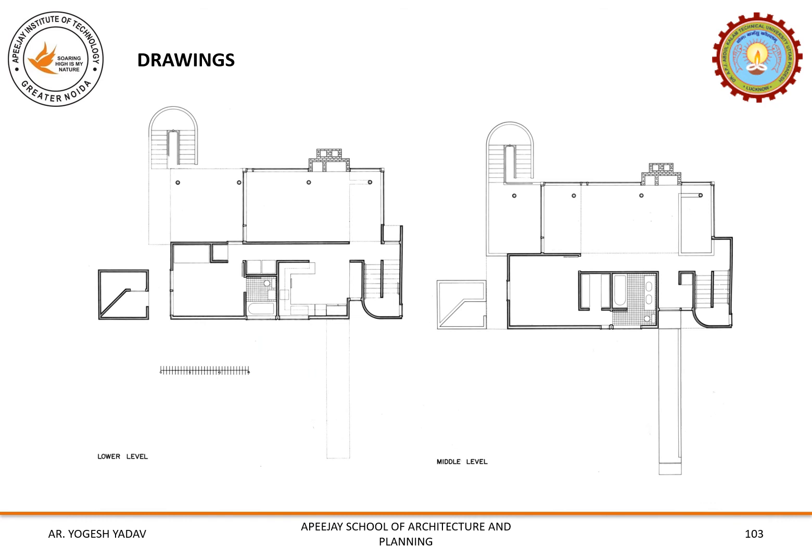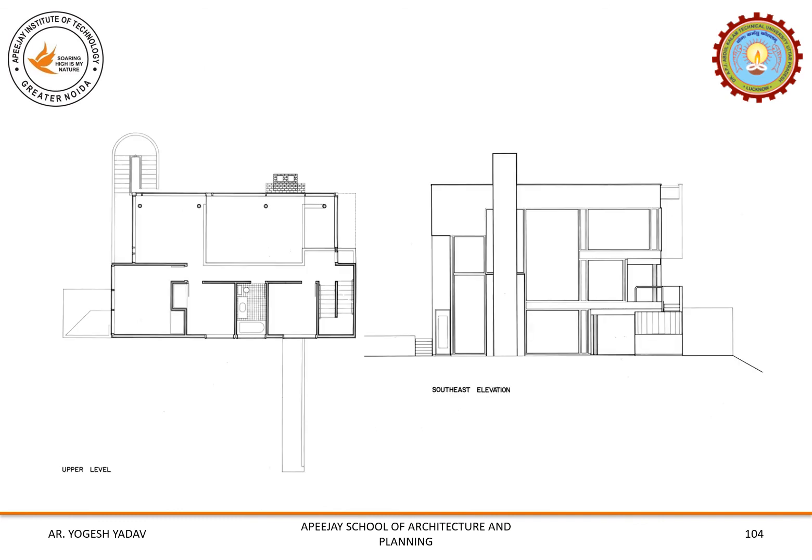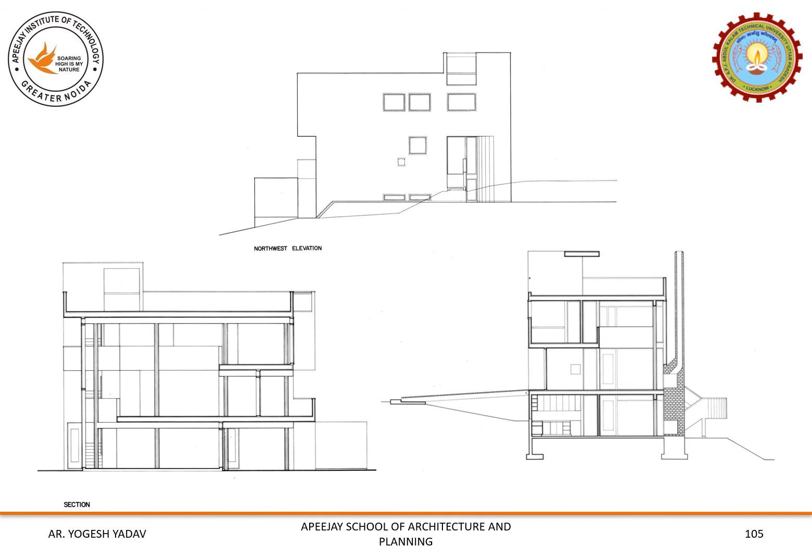Now we will see the drawings of the Smith House. The lower level plan shows the staircase, fireplace and the areas created. The second is the middle level plan. The upper level plan and the southeast side elevation show the main characteristics: the brick fireplace in the elevation and the glass curtain walls. This is the northwest elevation of the building. The vertical sections show vertical details at various levels in the building.